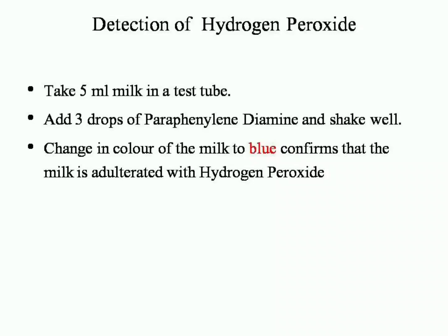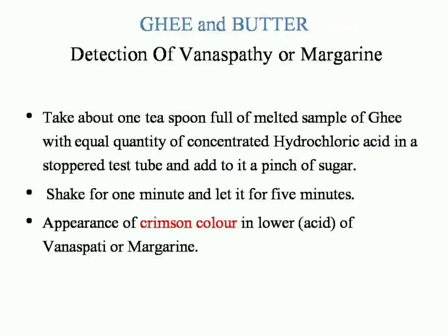Detection of hydrogen peroxide: add 3 drops of sodium bicarbonate to the milk and shake well. A change in color of the milk to blue confirms that the milk is adulterated with hydrogen peroxide.